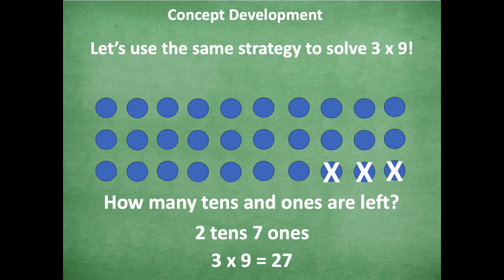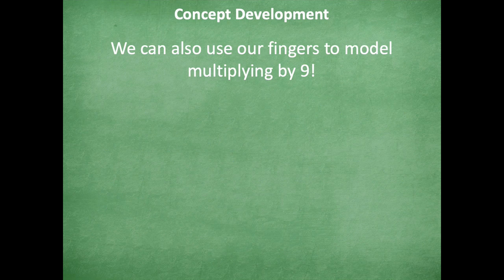Okay, so that's a pretty cool strategy. You can also use this strategy without using arrays. You could just do 3 times 10, which is 30, and take away three. So you don't have to draw your arrays just to use this strategy.